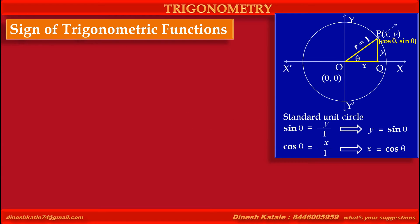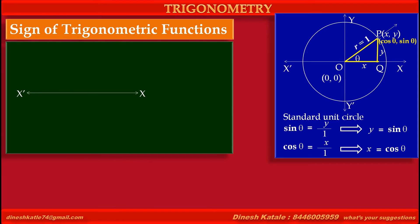So the polar coordinates of point P are (cos theta, sin theta). Now consider a coordinate system with a horizontal line as the x-axis and vertical line as the y-axis. The point of intersection of these two axes is the origin O. These two axes divide the whole plane into four parts known as four quadrants.